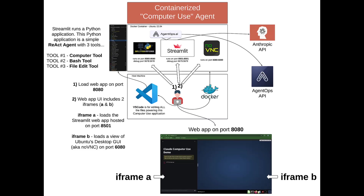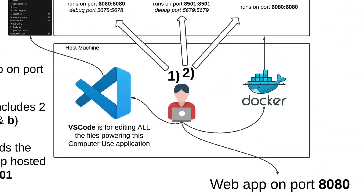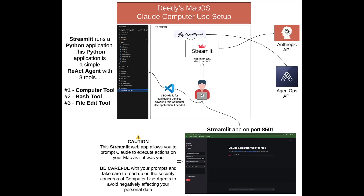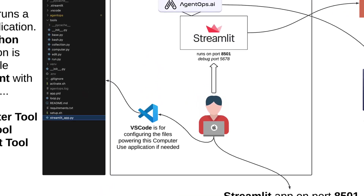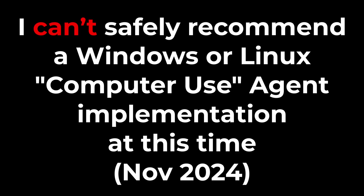In part one, we are going to show how to run a computer use agent in a Docker container. Part one's content should apply to pretty much everybody, as Docker containers are supported on Mac, Windows, and Linux. In part two, we are going to show how to run a computer use agent directly on a Mac. General concepts demoed in part two will apply to Windows and Linux users, but part two's content is going to be of particular interest to those who use Mac-based machines, as I have not tested a particular Windows or Linux computer use agent implementation and cannot safely recommend one at this time.